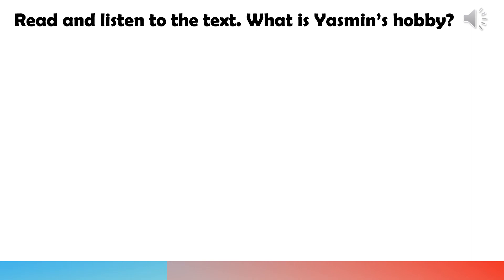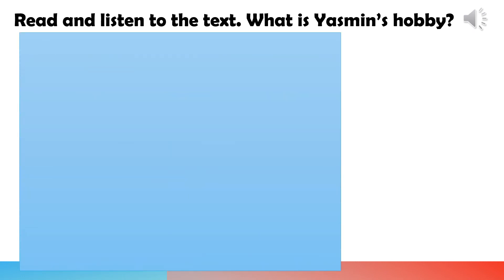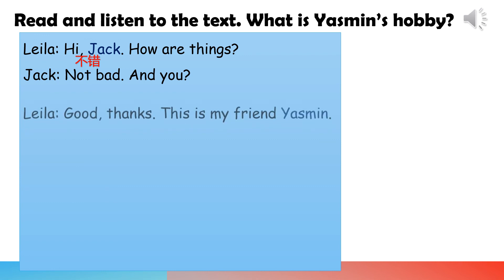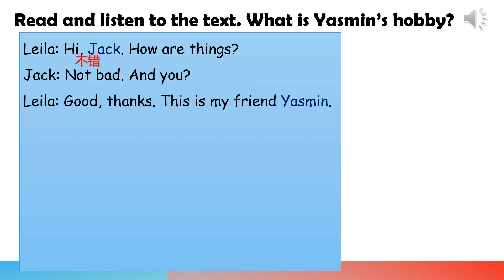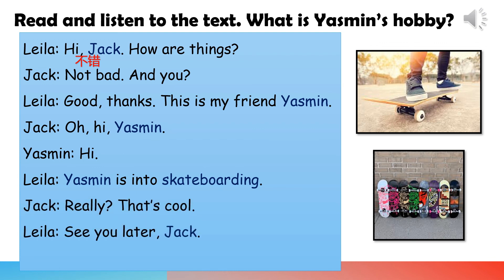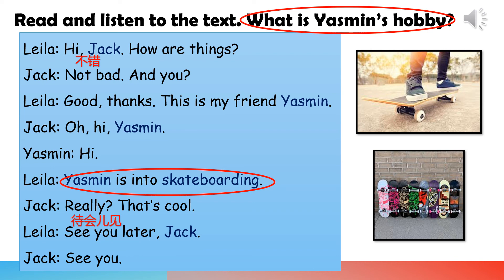Read and listen to the text. What is Yasmin's hobby? Starter unit, language focus, exercise seven. Jack: Hi Jack, how are things? Not bad, and you? Good, thanks. This is my friend Yasmin. Oh, hi Yasmin. Hi. Yasmin is into skateboarding. Really? That's cool. See you later, Jack. See you. Yasmin's hobby is skateboarding. The sentence 'This is my friend Yasmin' is used for introducing people.